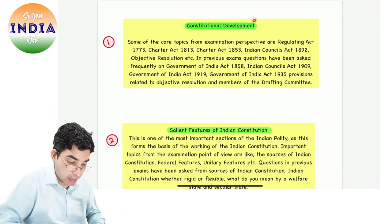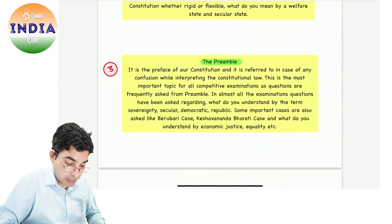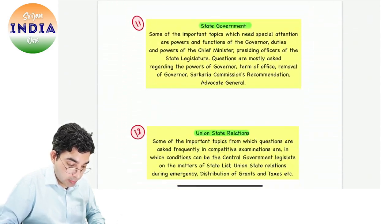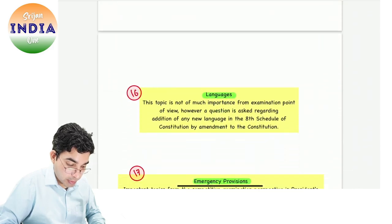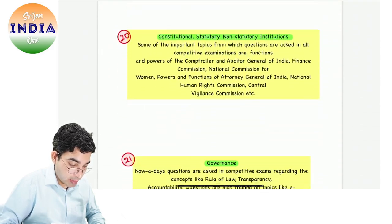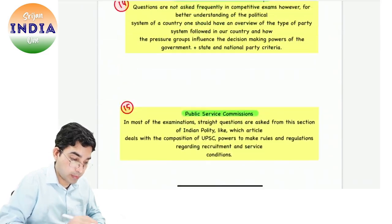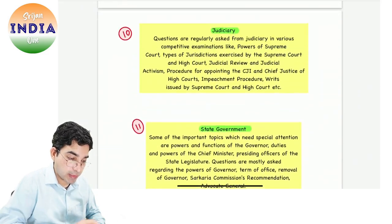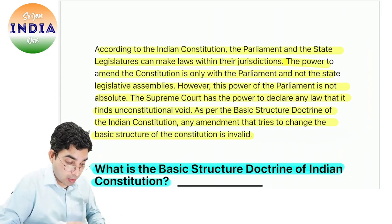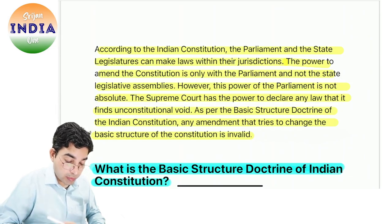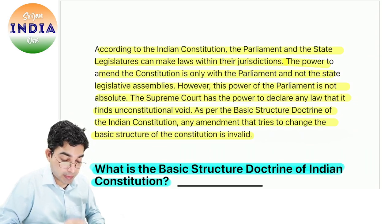Jaise ye politics hai — constitutional development, features, preamble, union, citizenship. Ye list maine abhi Telegram pe share kiya hai, wahan se aap iska access le sakte ho — governance and all, amendment and miscellaneous. Similarly, hum saare subjects ka aisa concise banaane waale hain. Polity mein constitution ka basic structure — ye bahut important theme hai polity ka, iss se sawaal aate hain, last year bhi aaya tha.